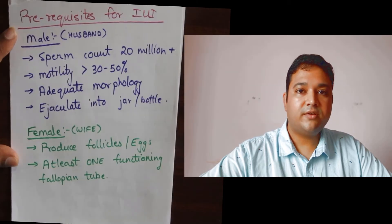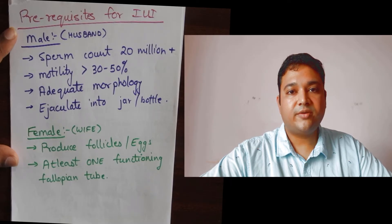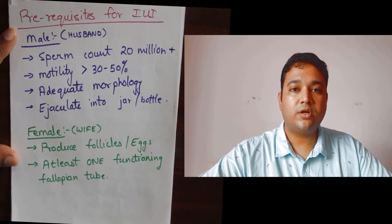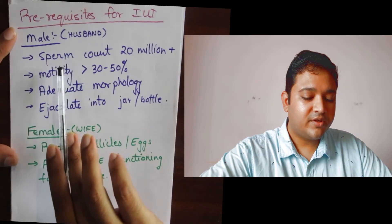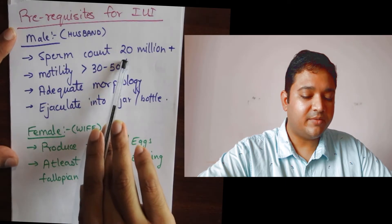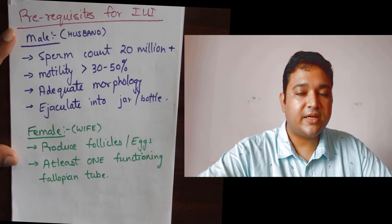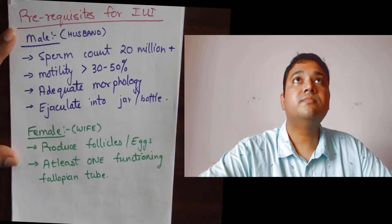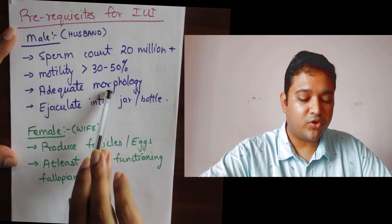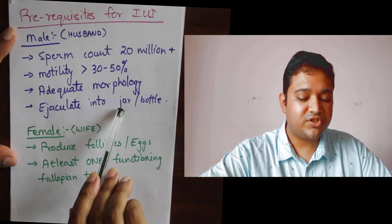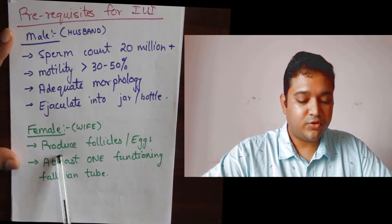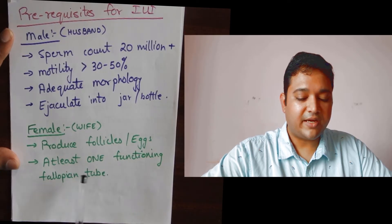What are the prerequisites for IUI treatment? IUI treatment is not for everyone, and certain prerequisites must be satisfied by both husband and wife. In the male, the sperm count should be at least 20 million — IUI starts suffering for sperm counts less than 20 million, such as 15 million, 10 million, or 5 million. The sperm motility should be more than 30 to 50 percent, there should be adequate sperm morphology, and the male should be able to ejaculate into a sperm collection jar. For the wife, she should be able to produce follicles or eggs and should have at least one functional fallopian tube.